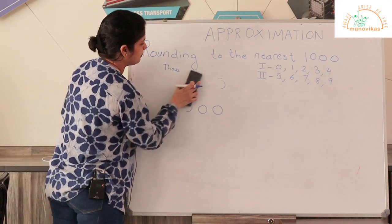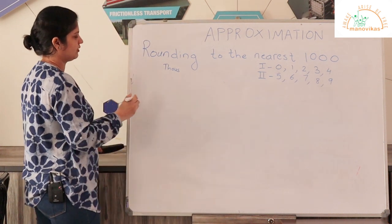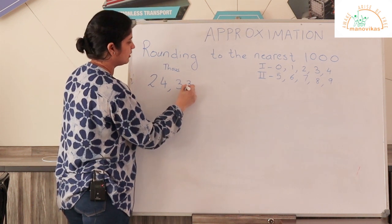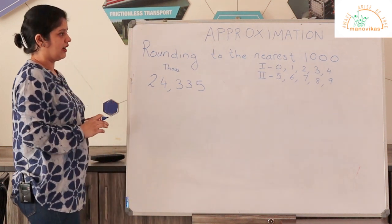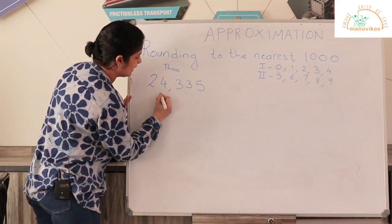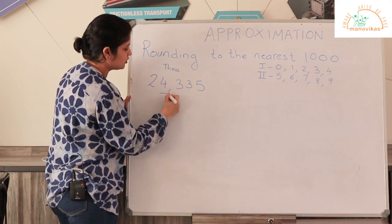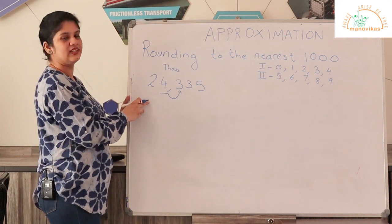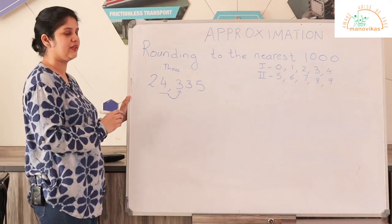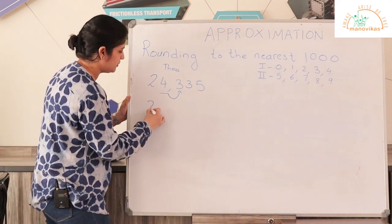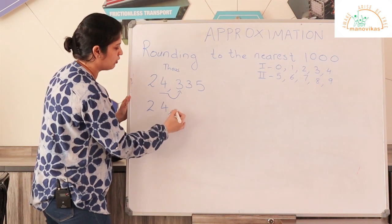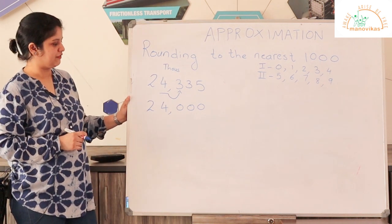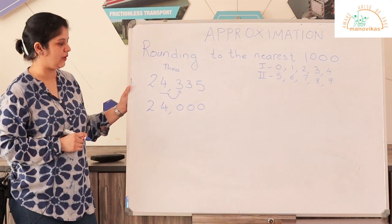Let us take one more example: 24335. Again we are rounding to the nearest thousand. So we underline the digit in the thousands place. Check out the number after it — that is 3. 3 is in the first range, so the digit in the thousands place will not change; it will remain as it is. So 24335 when rounded up to the nearest thousand is 24000.